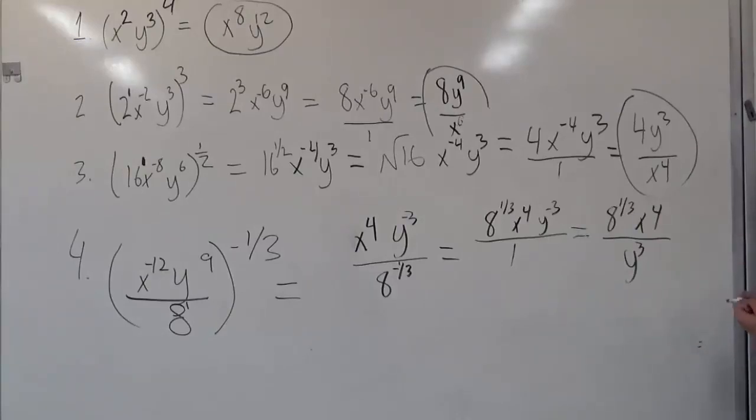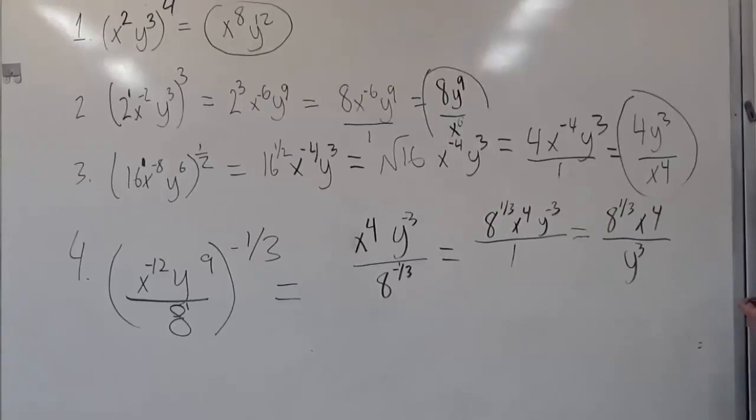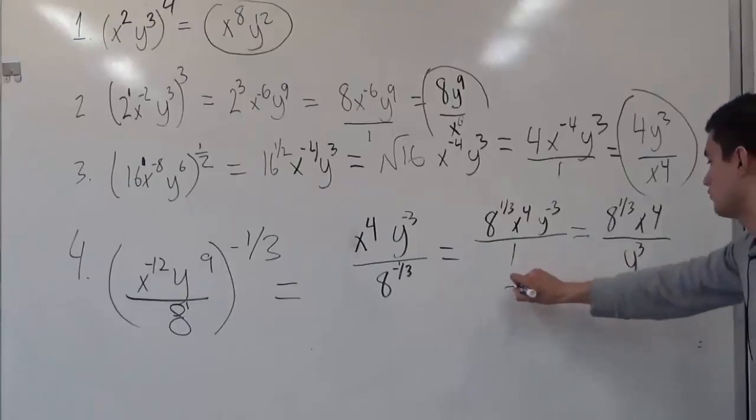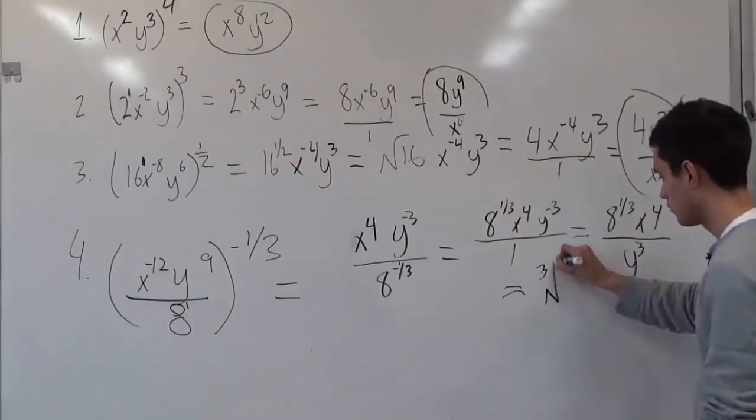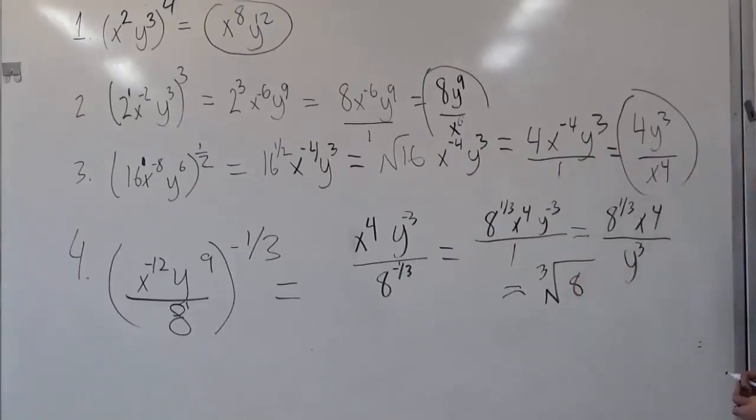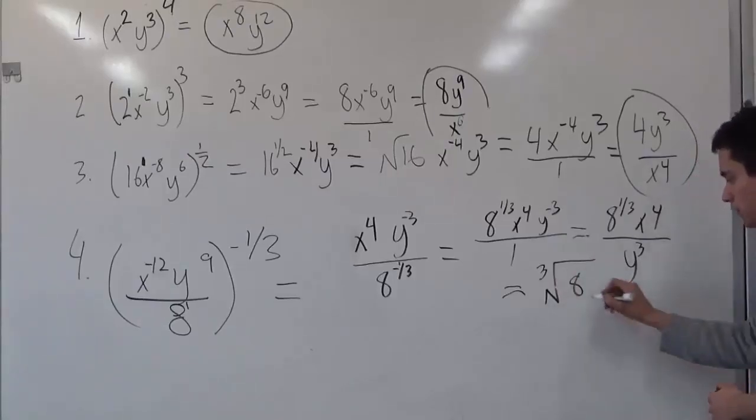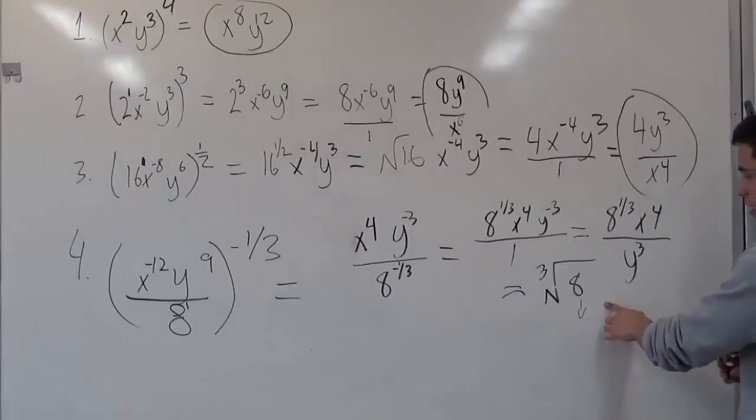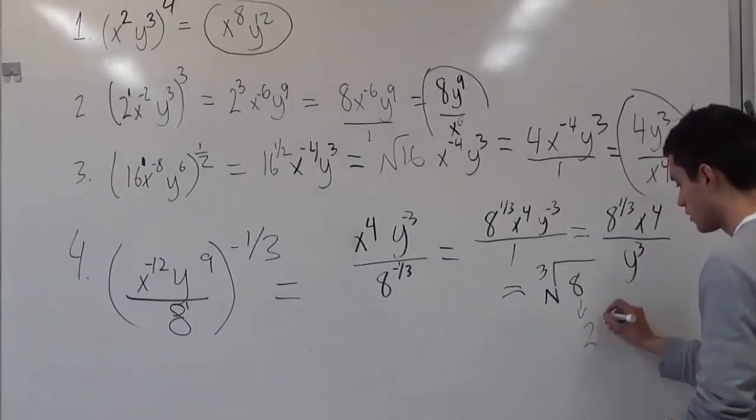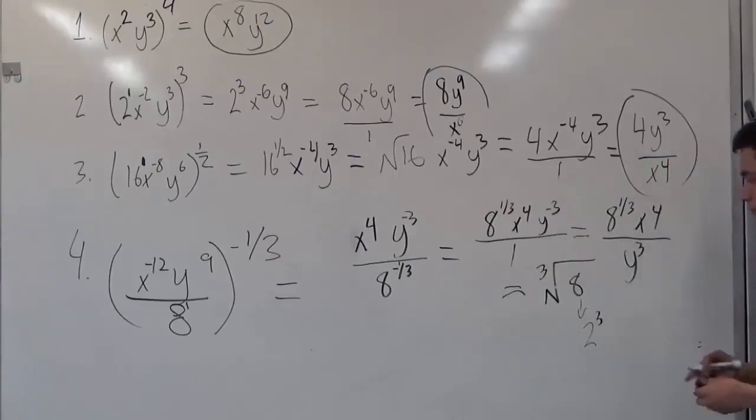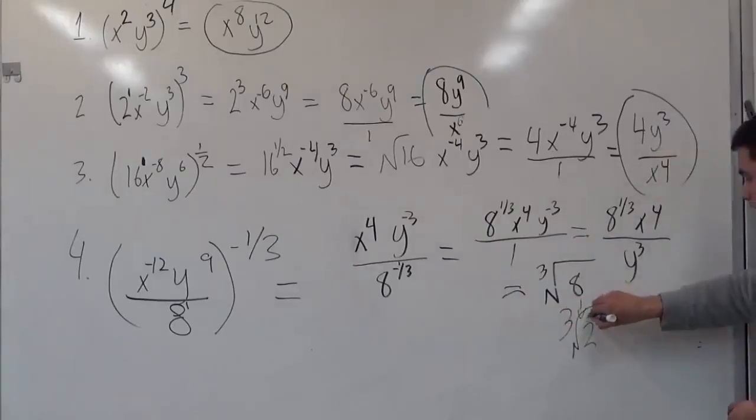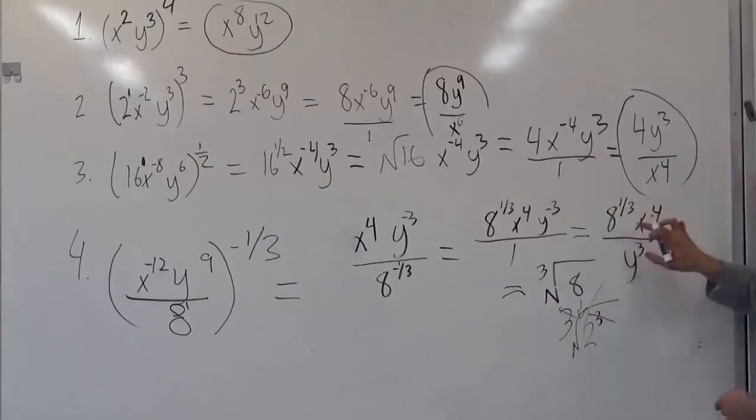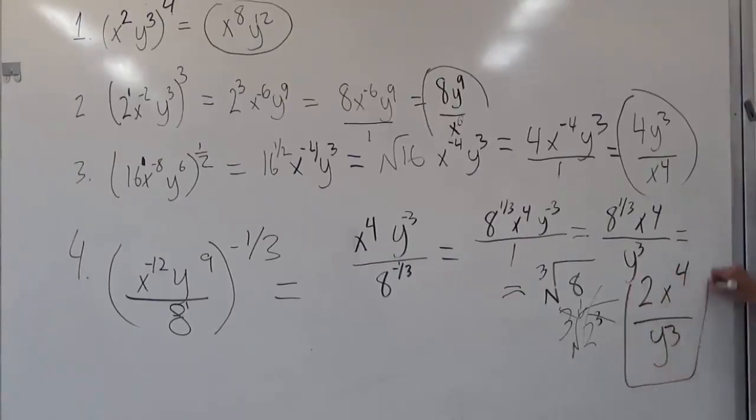However, this is not the full answer yet, because we need to simplify it. So as you can see, we have 8 to the 1 third power. And what we already know is that this can be converted into a cube root. So this can just be cube root of 8. So now, in order to cancel this out, we have to understand that something to the third power will give us 8. And that number would be 2, because 2 times 2 times 2 is 8. So in turns, the 3 cancels out, leaving the radical to cancel out. And this 8 to the 1 third can then become 2x to the fourth over y to the third, which is our final answer.